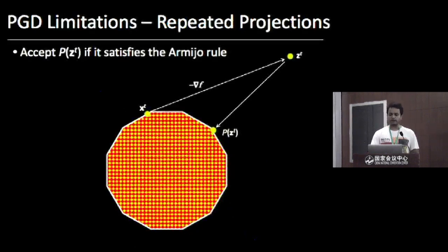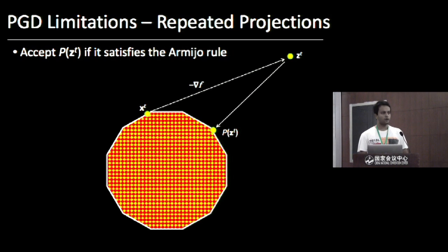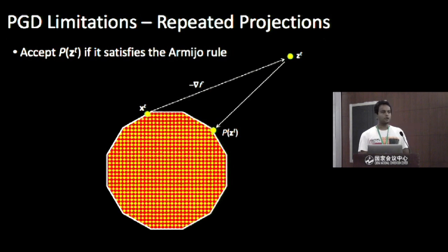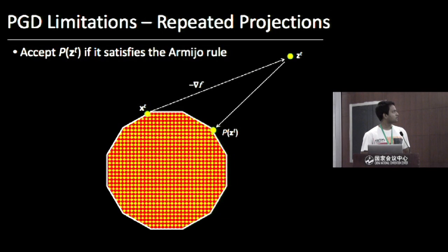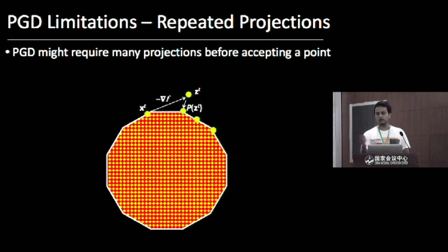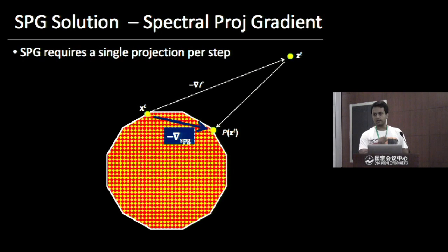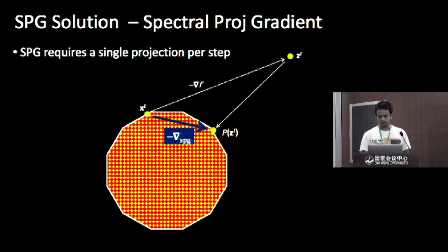Using spectral projected gradient also gives the advantage of a single projection per step. In PGD, taking a step requires moving in the direction of negative gradient, projecting back if outside the feasible region, then checking the Armijo rule — which is often not satisfied — requiring smaller steps and repeated projections. With SPG, there is just a single projection operation, and in most cases the first step size is accepted due to the second-order information used.